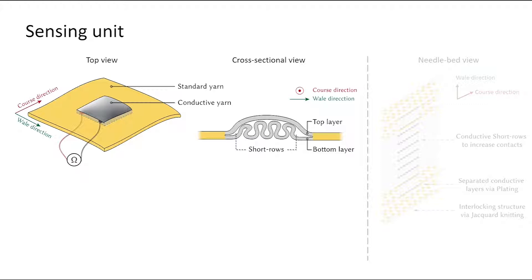At a rest state without any external applied pressure, large resistance is obtained because the knitting conductive yarn loops interlock loosely. When applying a load, the top and bottom layers collapse and the interactions among the conductive yarn loops increase, creating more electrically conductive paths and significantly reducing the resistance.